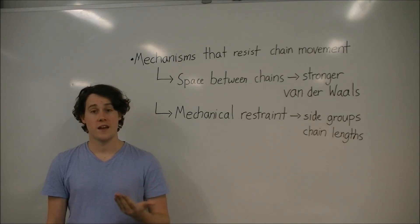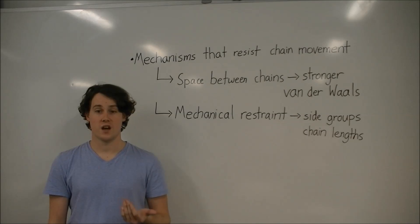First, the amount of space between the polymer chains. So the closer the chains are together, the stronger the van der Waals forces. How close polymer chains can get is also dependent on how well they can pack. This is affected by bulky side groups on the chain, as well as how ordered the polymer chains are. In a crystalline polymer, the chains are packed very close, and so the van der Waals forces are very strong.